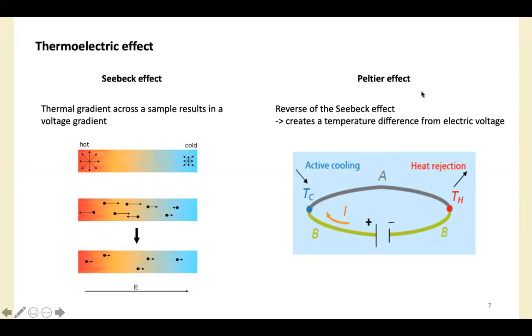The Peltier effect is exactly the reverse of the Seebeck effect, which is creating a heat difference from an electric voltage or current. So if you flow the current, one side is cooled and the other side rejects heat.